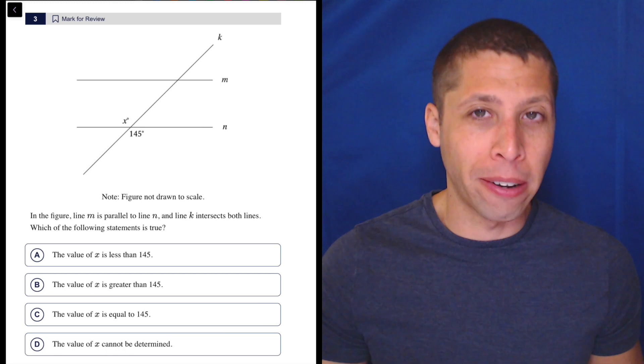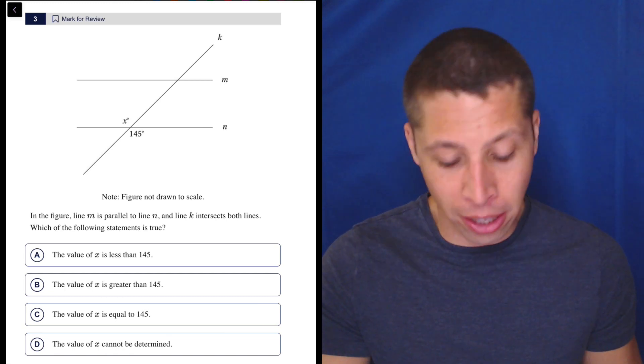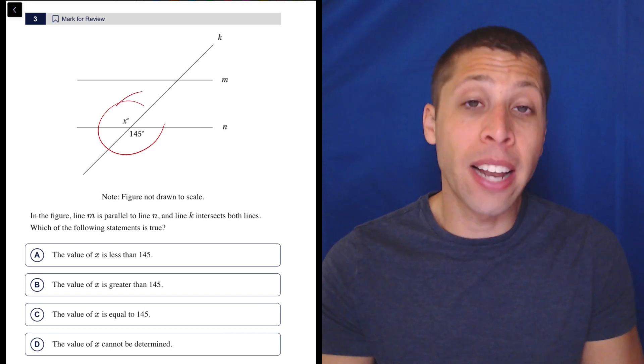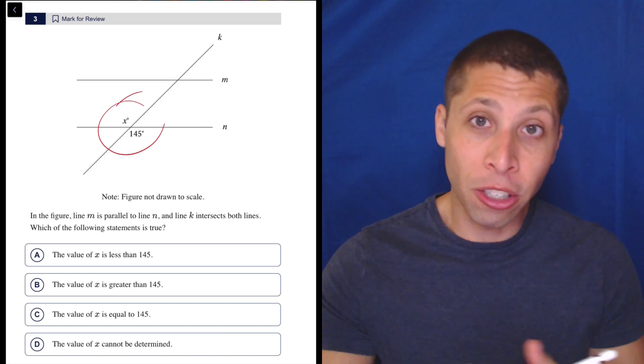In this case, they tell us that the lines are parallel, but that has nothing to do with the answer. It doesn't really matter because we're only focused on this little set here, and this is really just two lines intersecting, so we're just using angle rules.